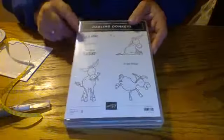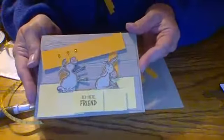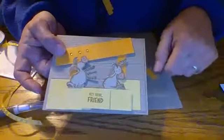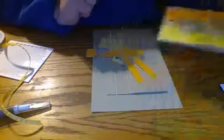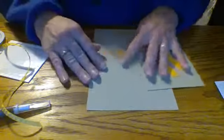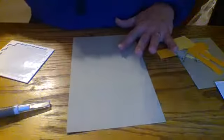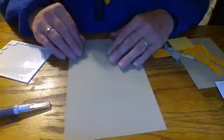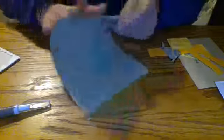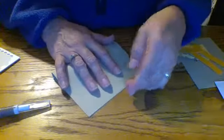All right. So we will move on to the next card. Again, we're going to be using our Darling Donkey set. And again, this is a free set that you'll be able to get out of the Sale-a-bration. This is a cute card. It says, Hey there, friend. I thought it was really cute because we made some little hay bales here. I thought that was just darling. So we will get to making this one.